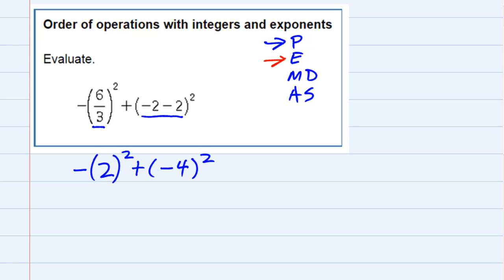So we then have to move to our exponents. So we do have a couple of exponents. The first one here on the left, notice that the negative out front doesn't have anything to do with what's actually being squared. So I'm just going to bring it down.